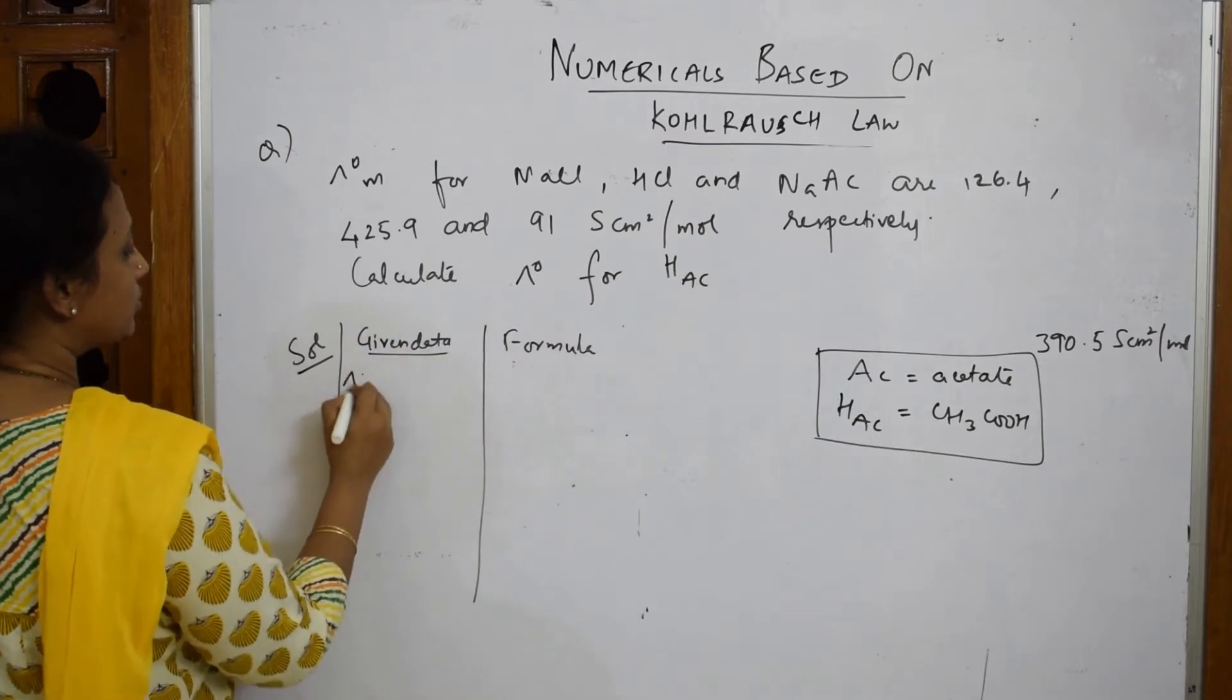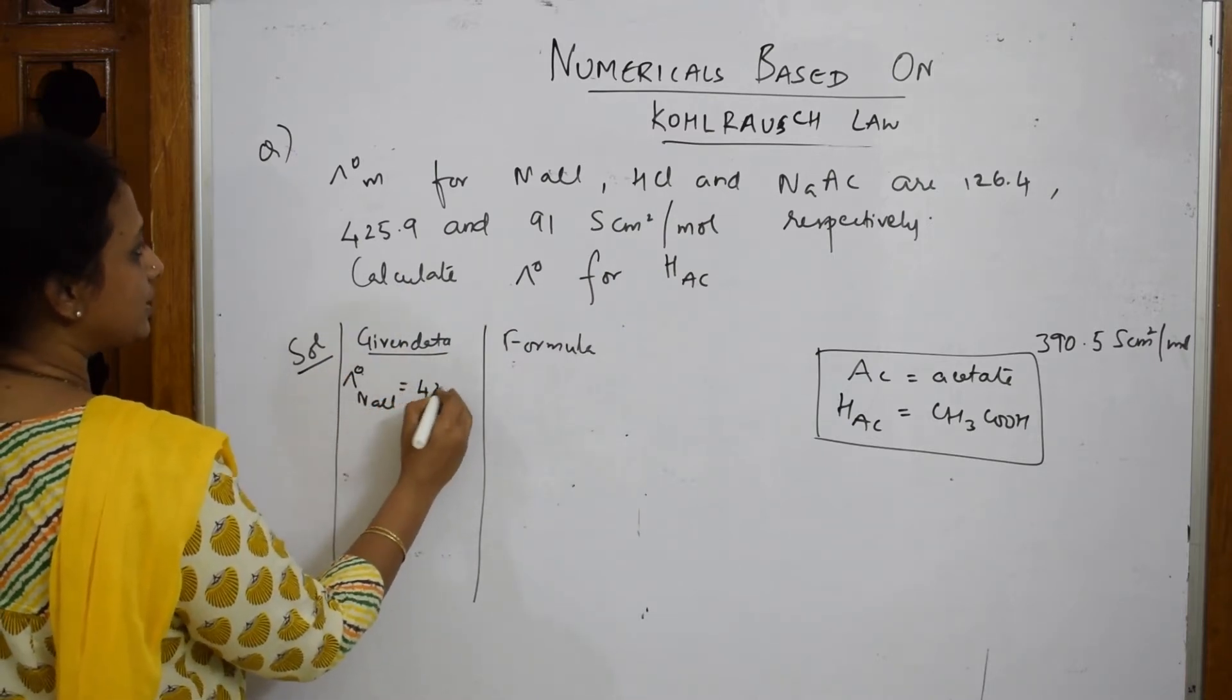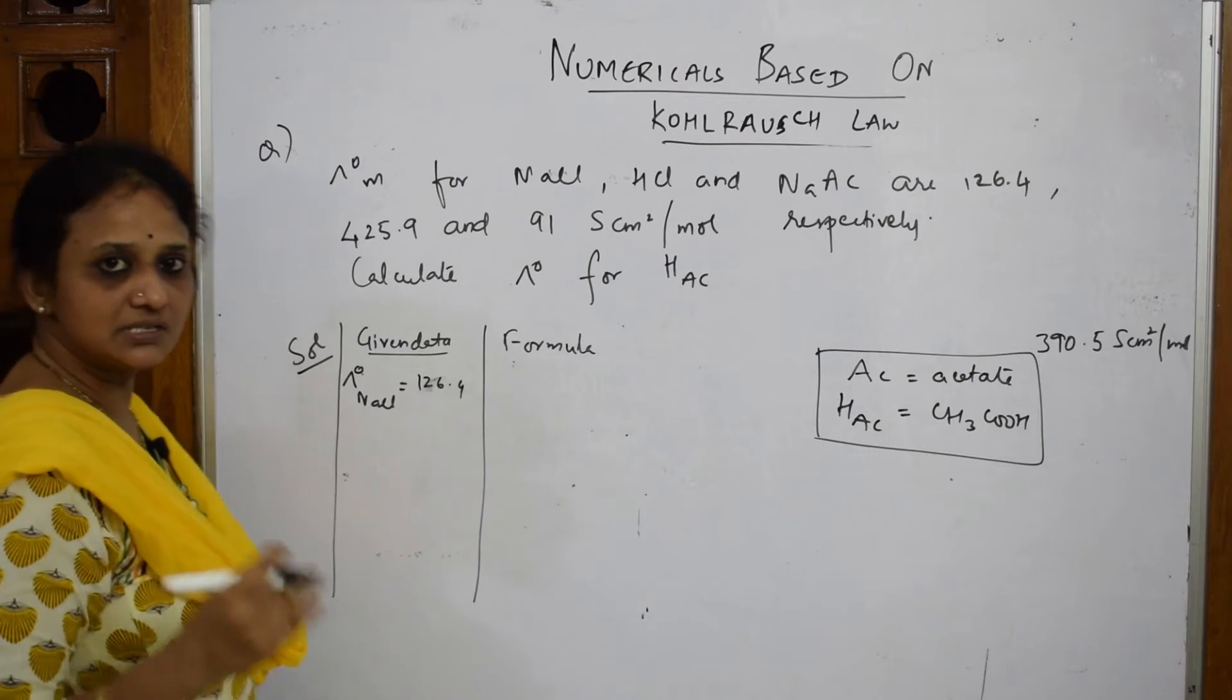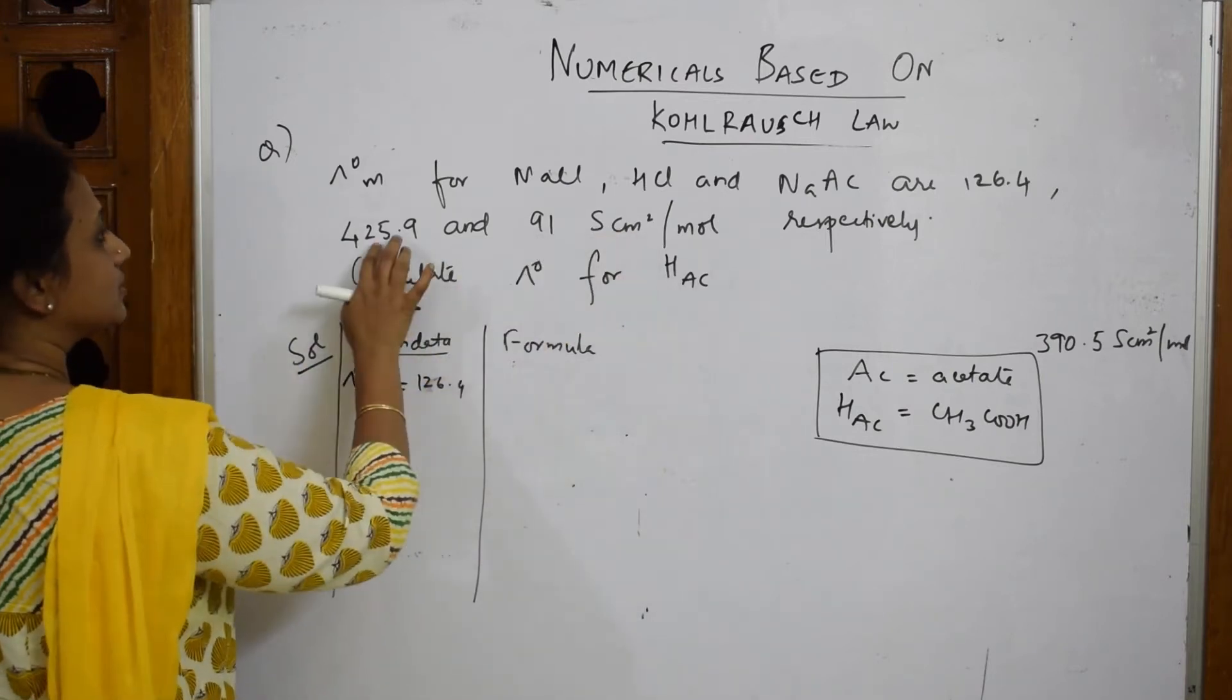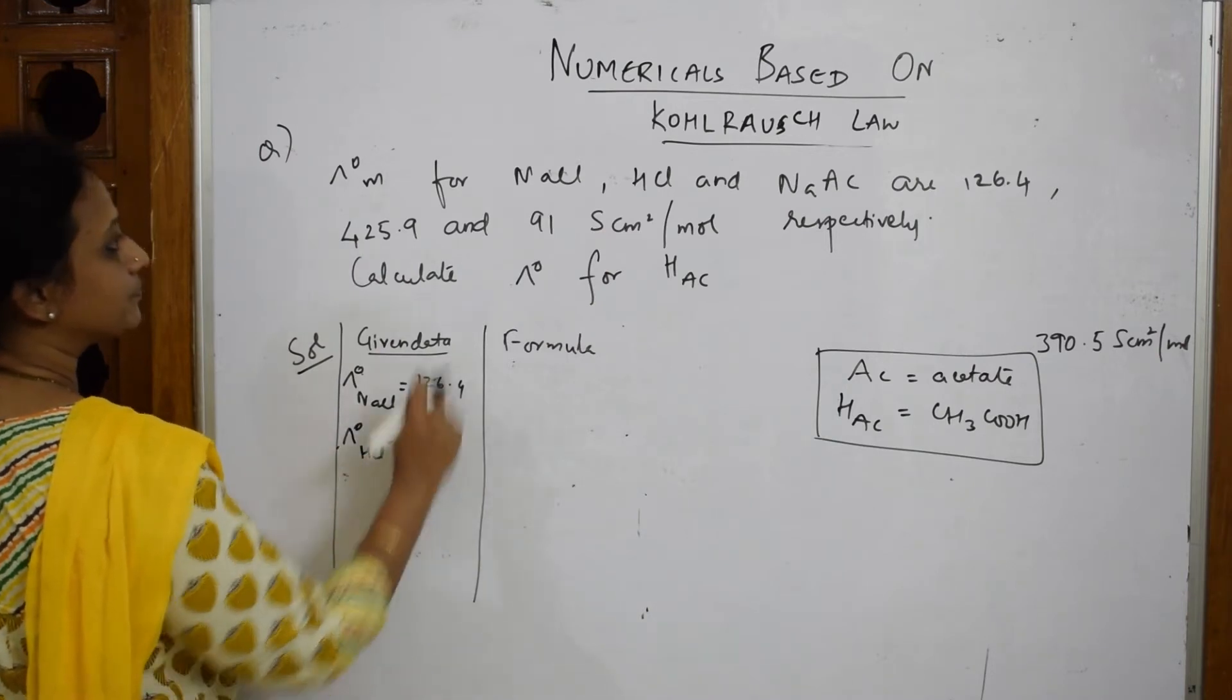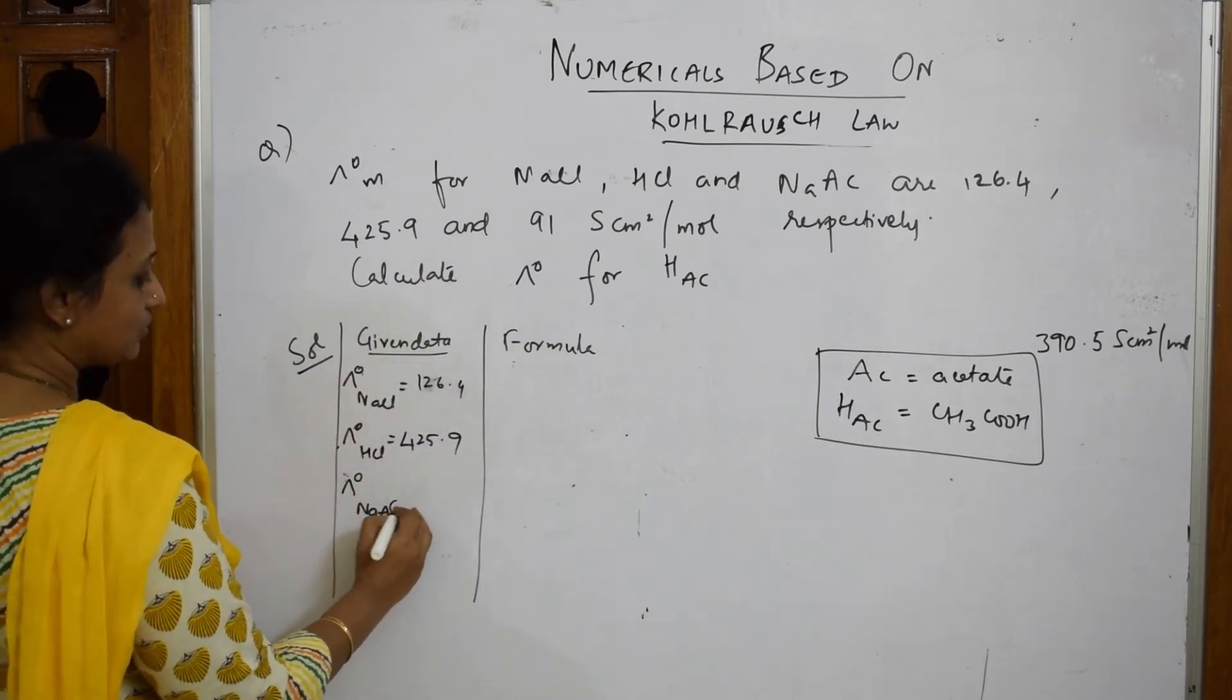Now, first given data: what do they give me? Molar conductivity at infinite dilution for NaCl, HCl, NaAc. Molar conductivity for NaCl is how much? Not 425, it is 126.4 siemens centimeters square per mole. Next, lambda not for HCl given to me is 425.9.